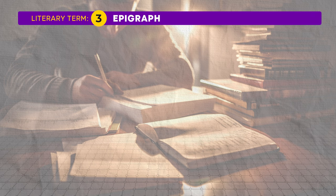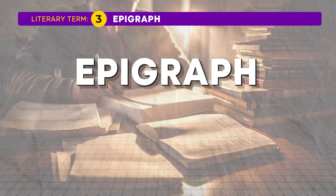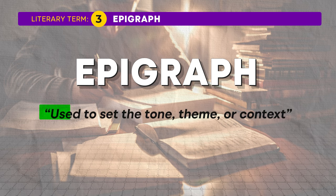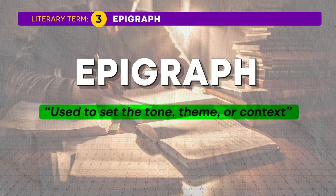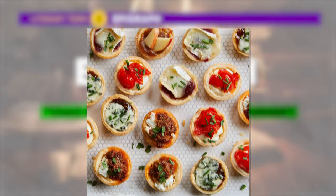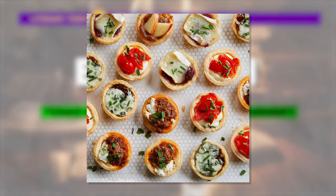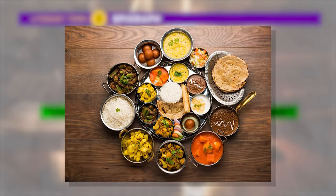Let's explore the next term: epigraph. An epigraph is a short quotation or saying at the beginning of a literary work, typically used to set the tone, theme, or context of the piece. Authors often use epigraphs to offer insight into the underlying message of their work or to establish a connection with another piece of literature. It's like a literary appetizer that prepares readers for the main course of the narrative.